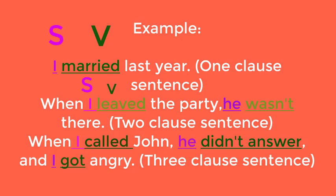The second clause has 'he' as the subject pronoun and 'wasn't' as the verb. The third example: 'When I called John, he didn't answer and I got angry.' Here, there are three clauses. Number one: 'I' is the subject, 'called' is the verb. Number two: 'he' is the subject, 'didn't answer' is the negative verb in the past. And the third: 'I' is the subject and 'got' is the verb.